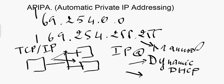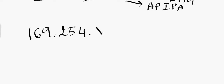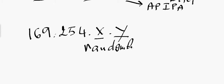If the computer cannot get an IP address from a DHCP server through dynamic assignment, the only way left is APIPA, which means the computer is going to assign an IP address to itself. It will start with 169.254.X.Y, where X and Y are randomly generated.